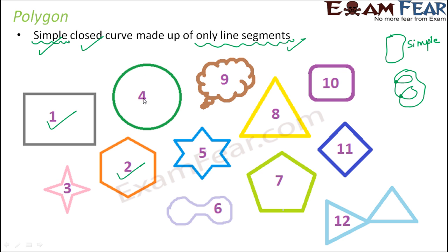Let's move on to number four. So number four is also closed. Is it made up of line segments? No. So since it is not made up of line segment, this is not a polygon because it doesn't satisfy one of the criteria. Let us look at number nine. So in number nine also, even though it is closed, but it is not made up of line segments. So this is also not a polygon.